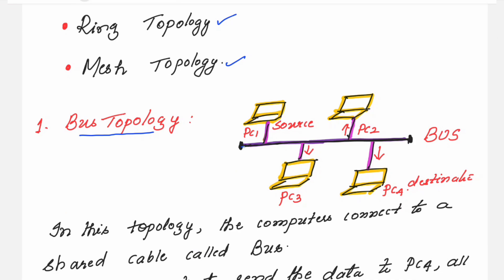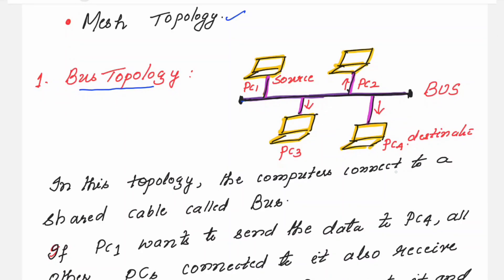The diagram for the bus topology is shown here. In this topology, the computers are connected to a shared cable called a bus. The straight line shown in the diagram is called the bus — it is simply a cable. To this cable, all the different PCs are connected. In this diagram, I have shown 4 PCs: PC1, PC2, PC3, and PC4, all connected to this cable.